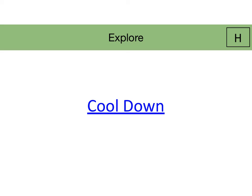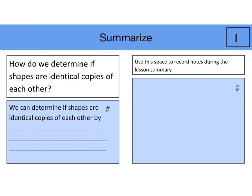Students can do the cool down instead of repeating the summary question twice. And for the summary question, it is how do we determine if shapes are identical copies of each other? And here you're going to support students with a sentence starter.